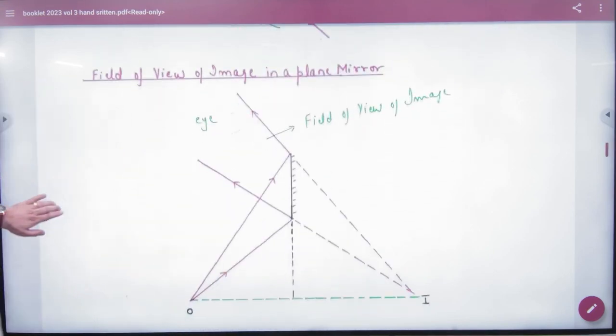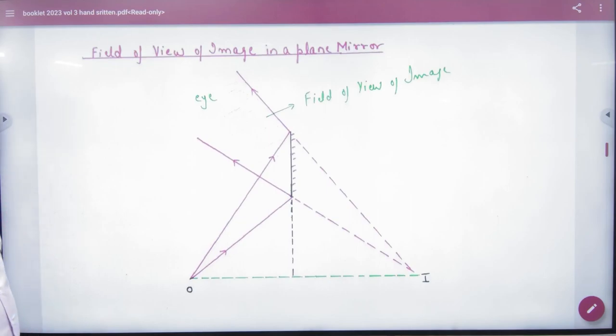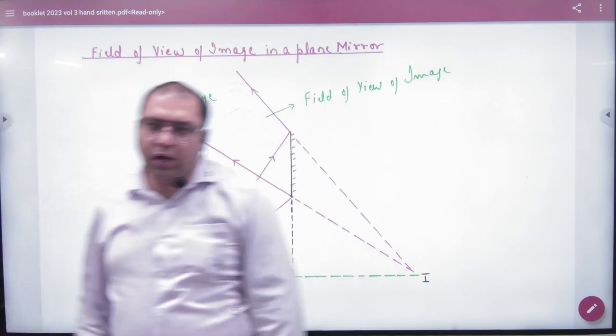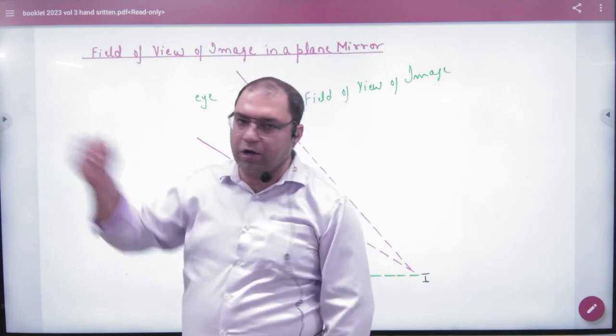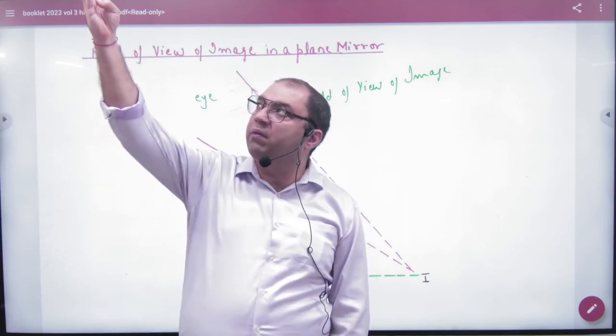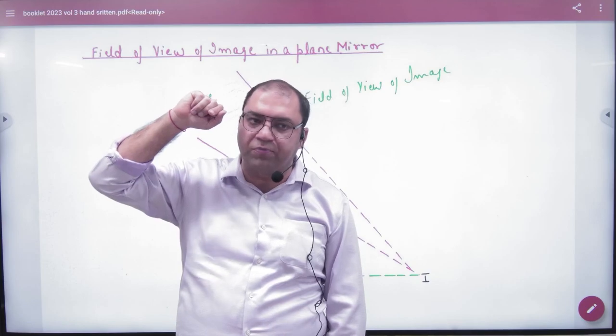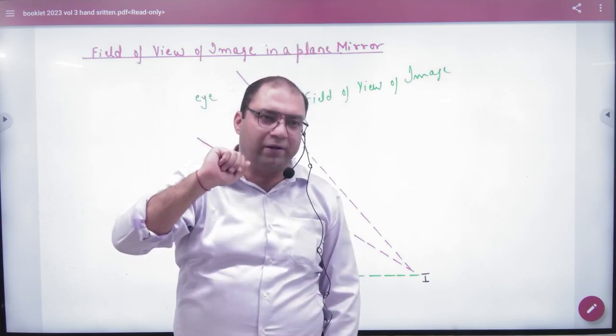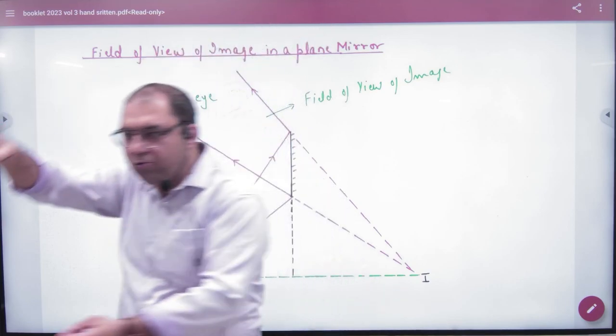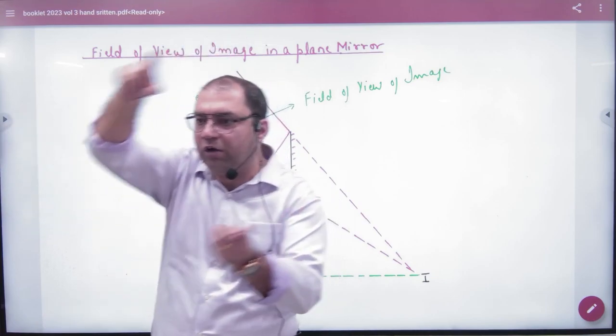Point number 2, what is field of view? If you think there is a mirror in front, then I can see the bulb in that bulb, but I can't see the bulb in it. So what I can see will be the field of view.